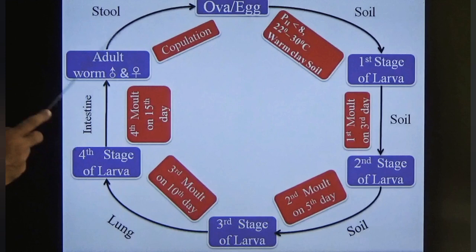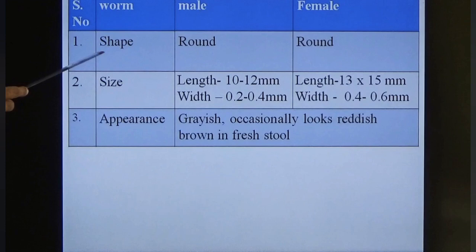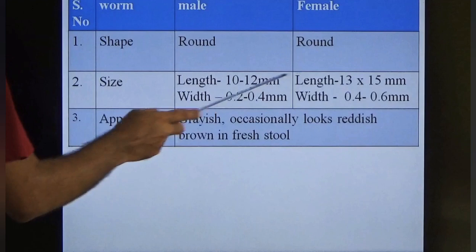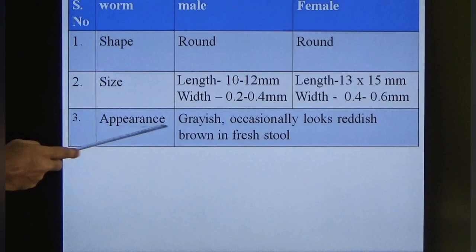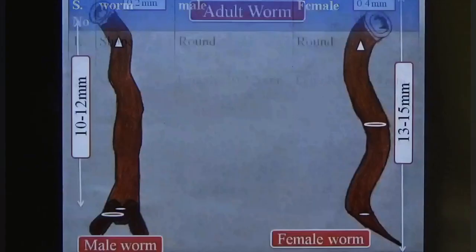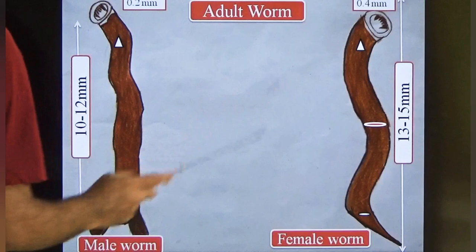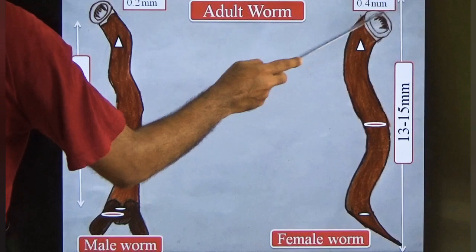The adult worm is round in shape. Female worms are longer than males, as is common in nematodes. Male length is 10–12 mm, female is 13–15 mm. Appearance is grayish, occasionally reddish-brown. Male width is 0.2 mm and female is 0.4 mm.